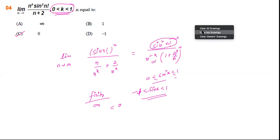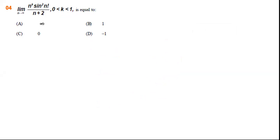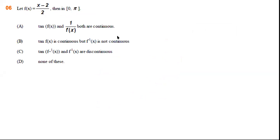Let us now take one more question. This is a very interesting question: f(x) is given as (x minus 2) divided by 2. Then it says that in the interval 0 to π (inclusive), which of the following options are correct? We need to understand about tan(f(x)) — when tan is continuous and when it is not.